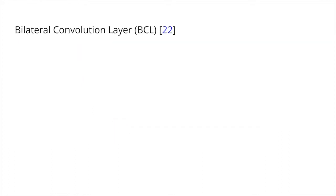We first review the operations in a Bilateral Convolution Layer, or BCL, and its favorable properties for point cloud processing, and will then proceed to explain how we build our deep architecture with BCLs as building blocks.